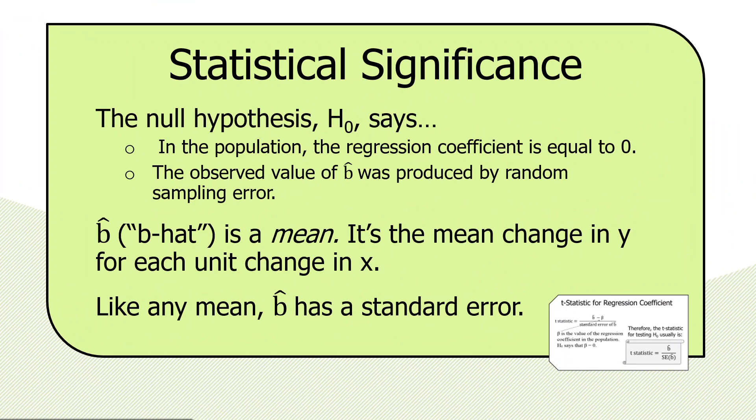And further, the observed value of b-hat, or the regression coefficient, according to the null hypothesis, was produced by random sampling error when the sample was drawn. So in every other way, this is perfectly consistent with how the null hypothesis states its position in all other statistical tests.